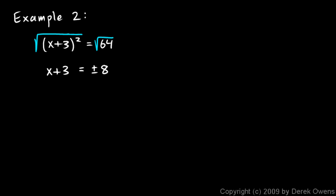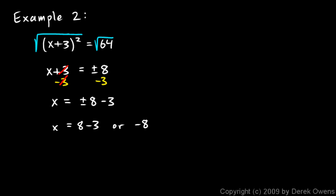I'm not done — I still need to solve for x. I subtract 3 from both sides: the left side becomes x, and the right side is plus or minus 8 minus 3. This means the 8 could be positive or negative, giving two answers: x equals positive 8 minus 3, or x equals negative 8 minus 3. So x equals 5, or x equals negative 11.